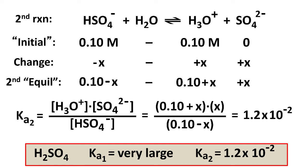So usual equilibrium stuff, just sort of be careful of your setups. And now we have 0.1 plus x times x over 0.1 minus x is equal to the Ka2 of 1.2 times 10 to the minus second.